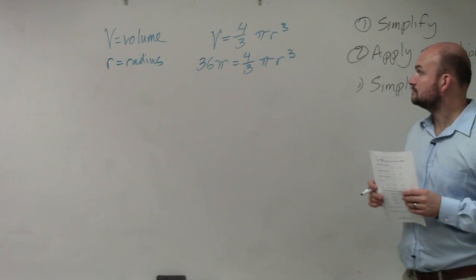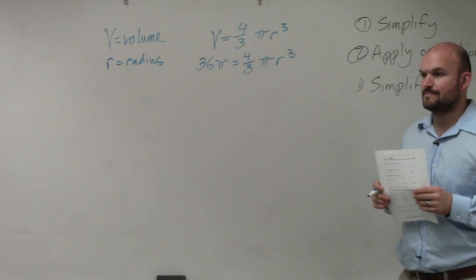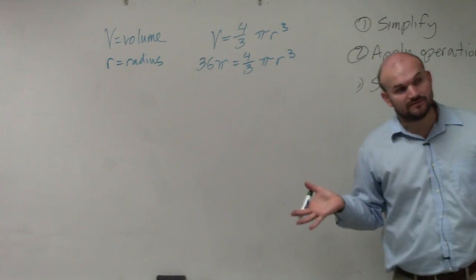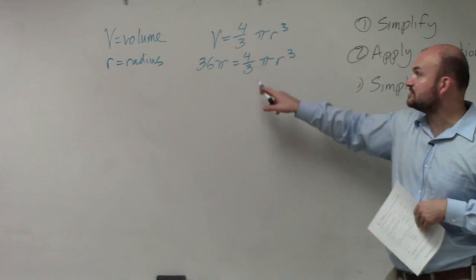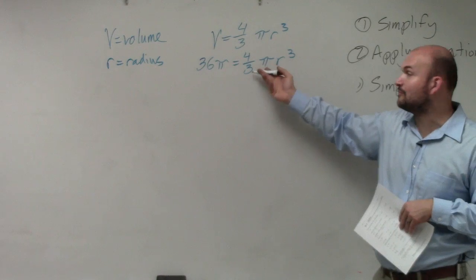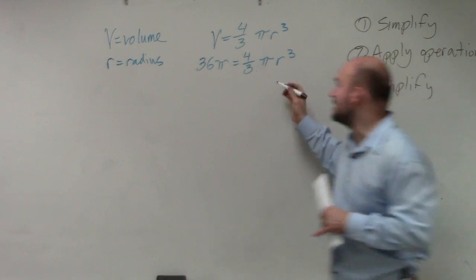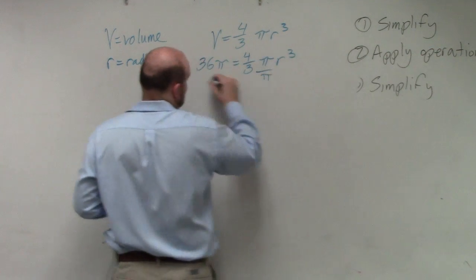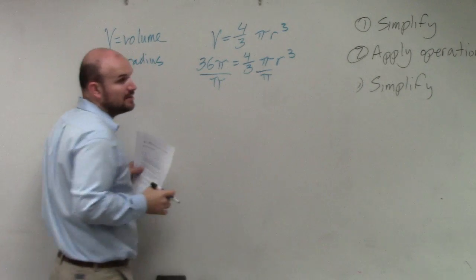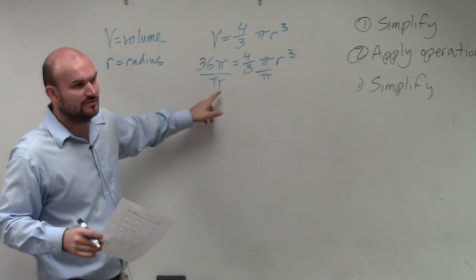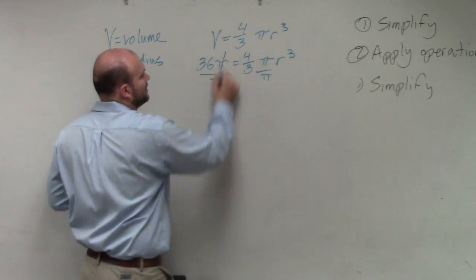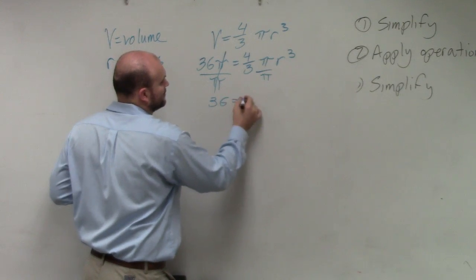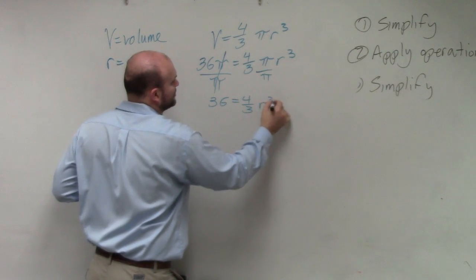Oh, is it just 36 pi? That's what the volume is. OK, so now we've got to solve. What I would do first here is you could divide by 4 thirds on both sides. I'm just going to do one at a time, though. Let's divide by pi on both sides. Pi is a number. What is a number divided by itself? 1. Just goes to 1, right?